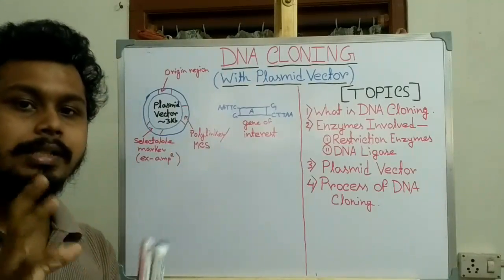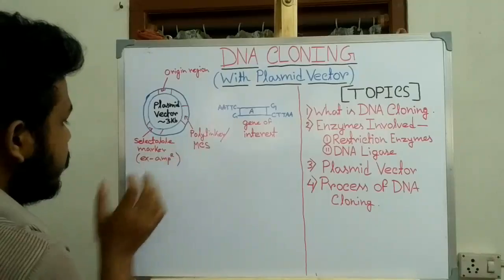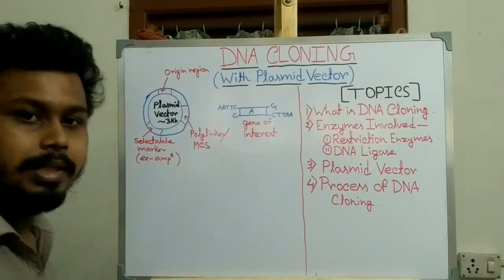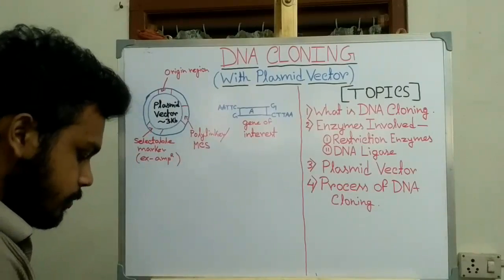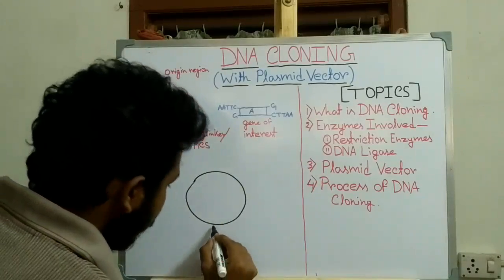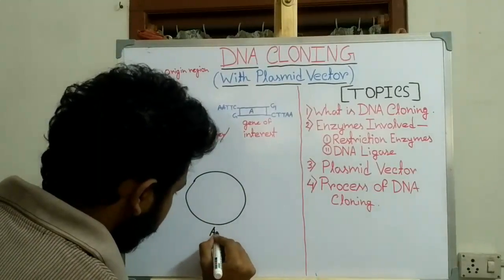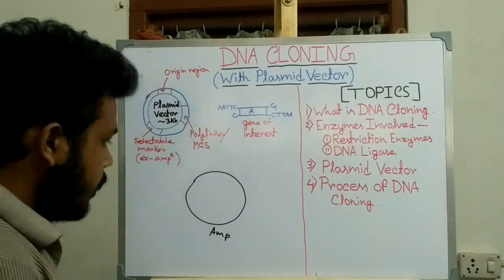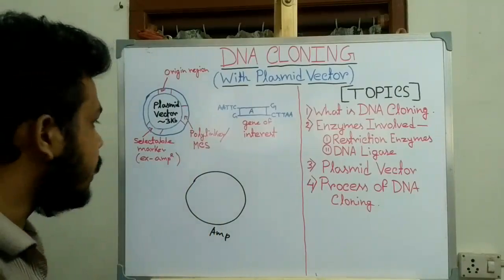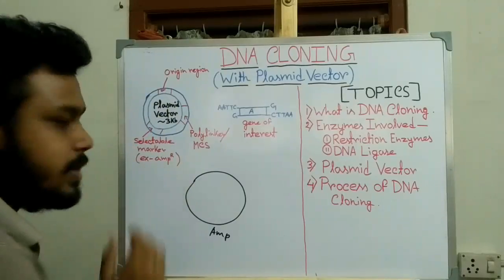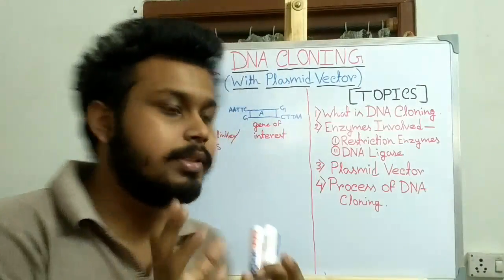Third is the selectable marker. The selectable marker is used to select host cells that contain this plasmid vector. For example, AmpR — the ampicillin resistance gene — acts as a selectable marker. In a medium containing ampicillin, only those host cells that contain the plasmid vector with the ampicillin resistance gene will survive.